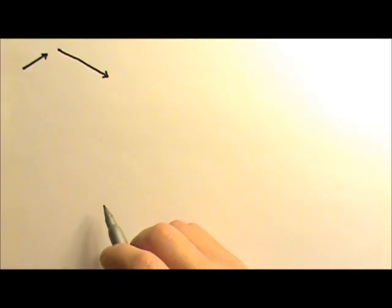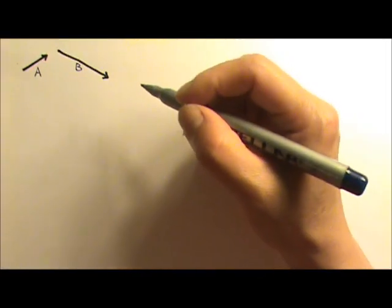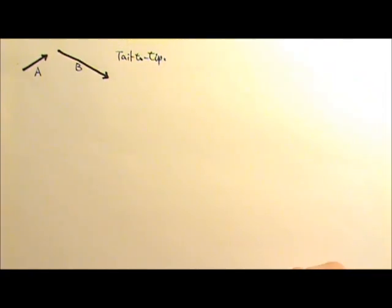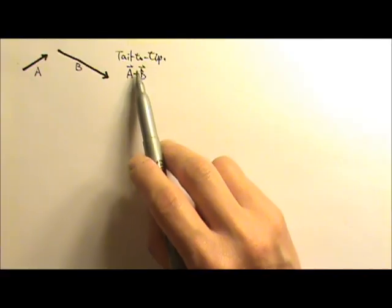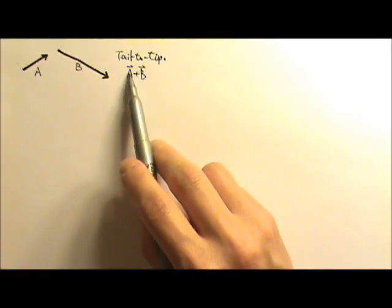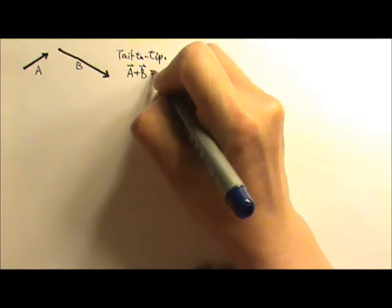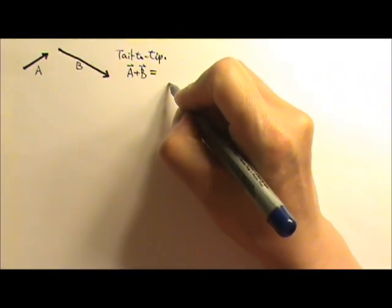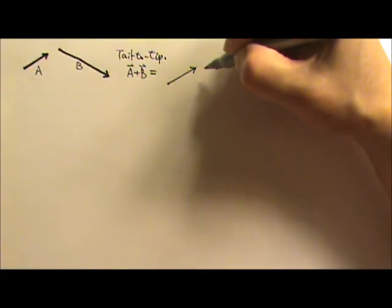Now let's go over the three ways of adding vectors. Say we want to add vector A and vector B. The first method is called the tail-to-tip method. We can write A plus B with vector hats, which only indicate that these are vectors. To add A and B, we first copy vector A down exactly — same length, same direction — and then copy B, placing the tail of B at the tip of A.